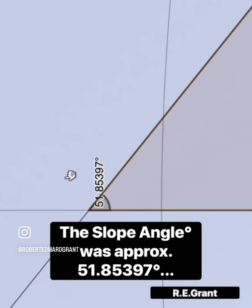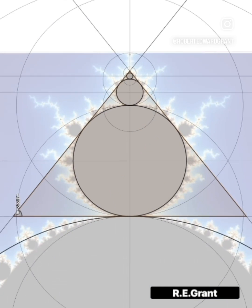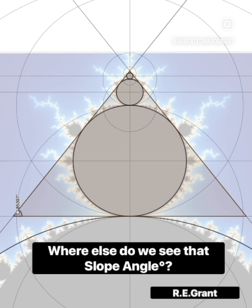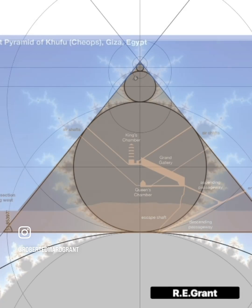Now, where have we seen this slope angle before? 51.85397 is the slope angle for the Great Pyramid of Giza, leading me to the greater question: just how advanced was the ancient builder's knowledge?